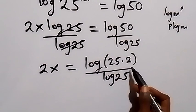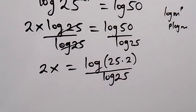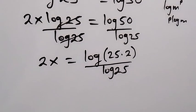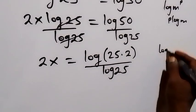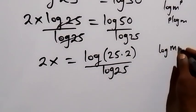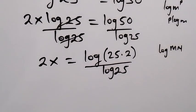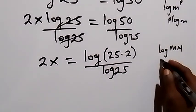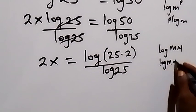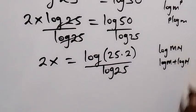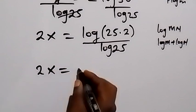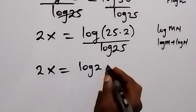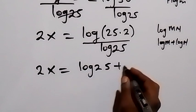We can express log 50 as log of 25 times 2, then over log 25. So log 50 can be written as log(25 times 2). In the next step we apply the product law of logarithms: log(m times n) equals log m plus log n. So this becomes 2x equals log 25 plus log 2.